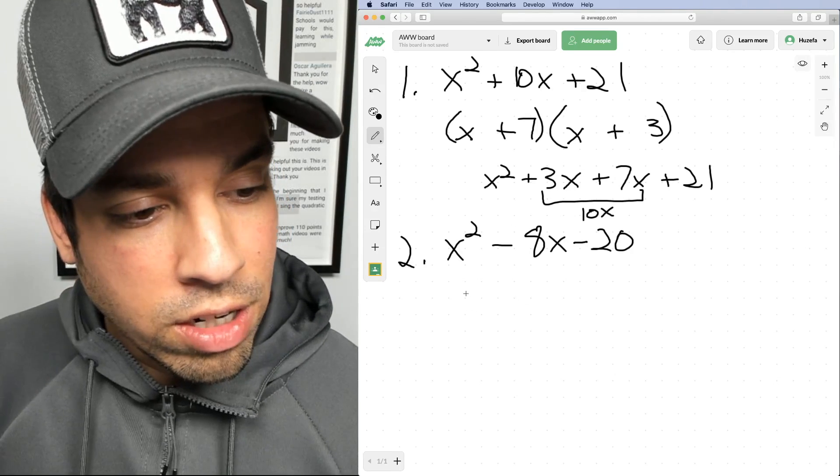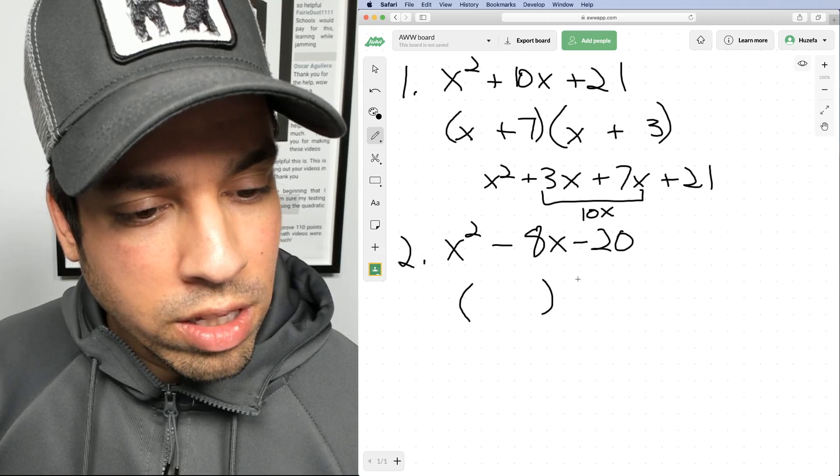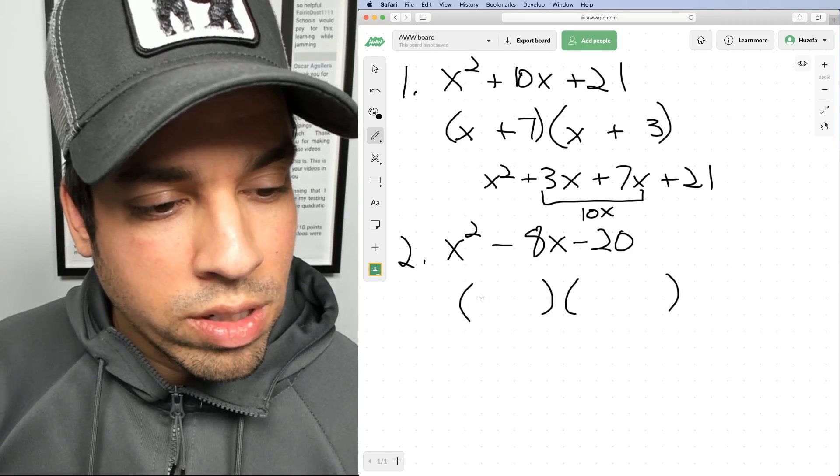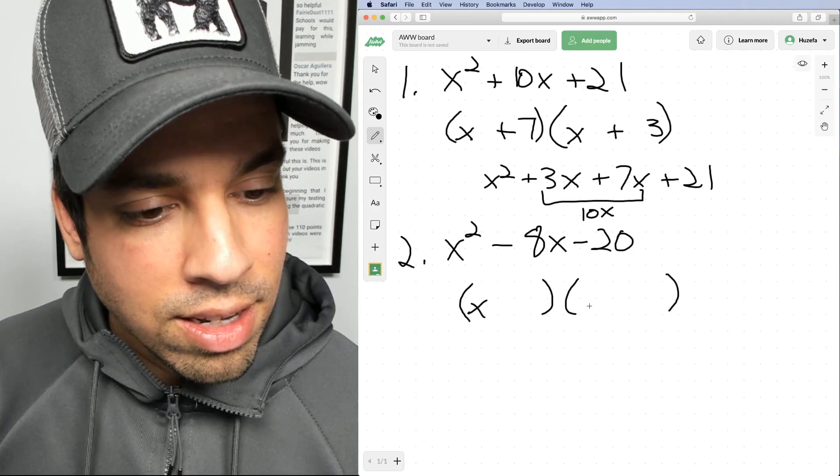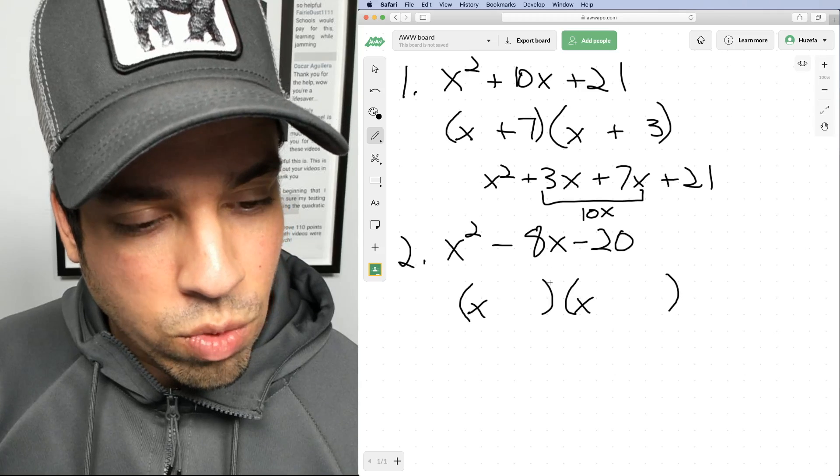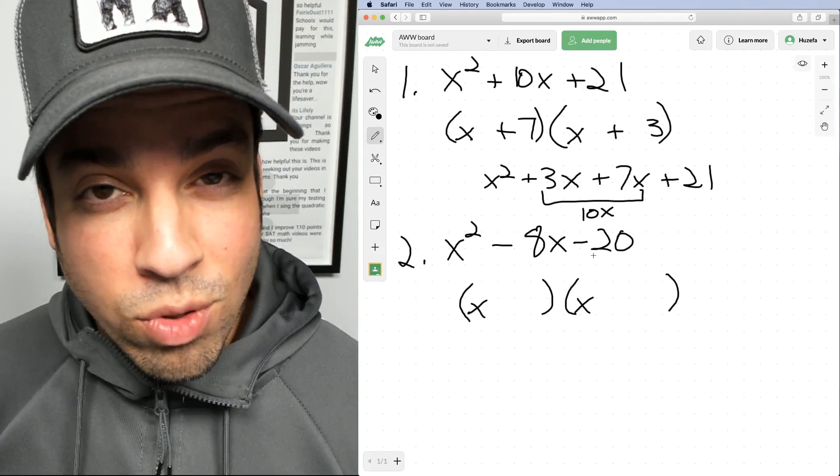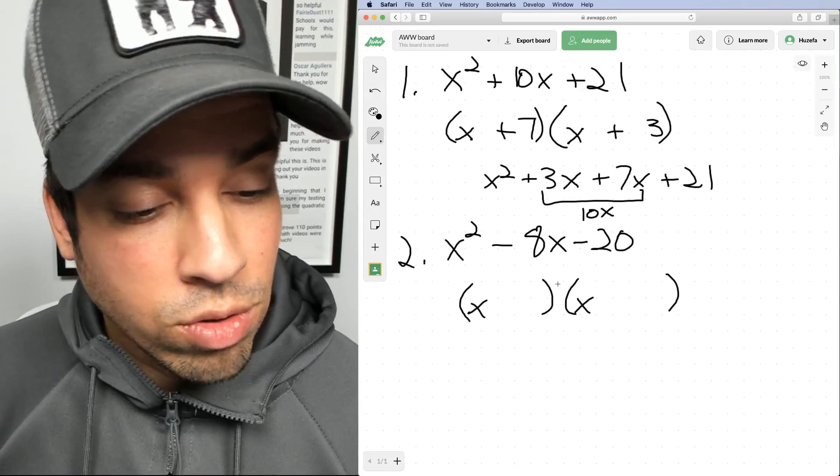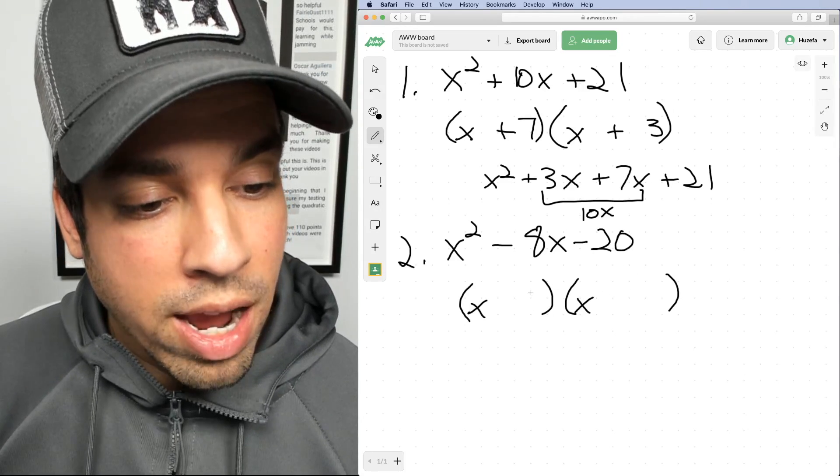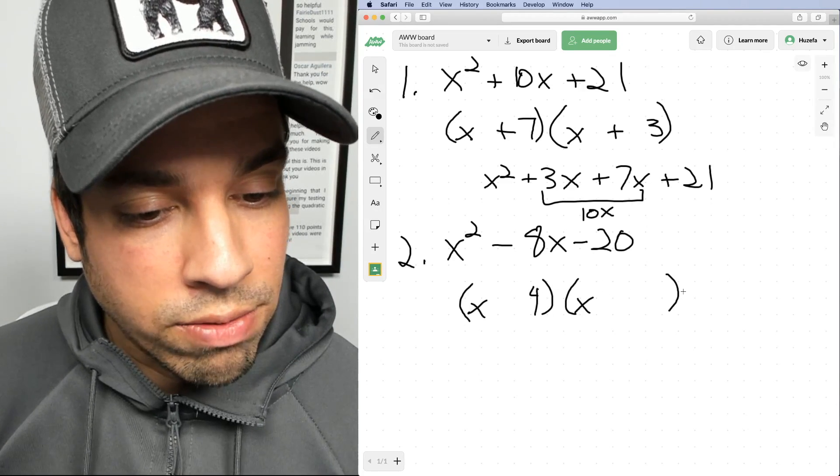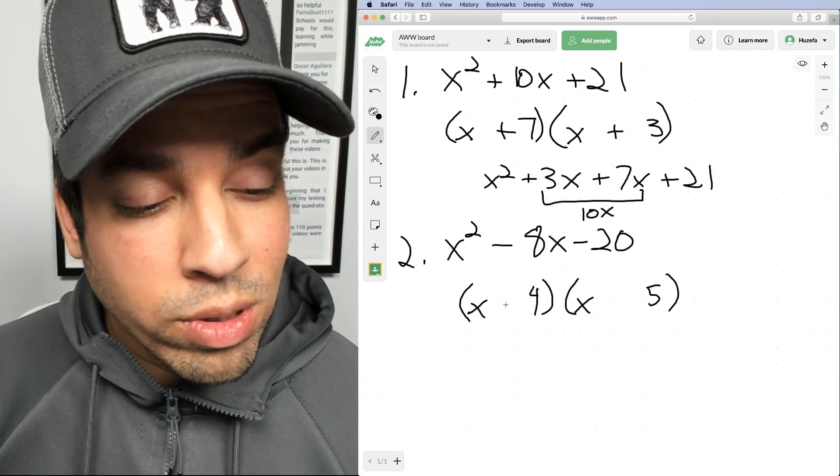Now let's apply that same logic here. Again, we want to think about these two binomials, and we're always going to start with that x and x, because that's going to give us the x squared. Now we want to see what's going to multiply to negative 20 but add to negative 8. We can play around with some different things.